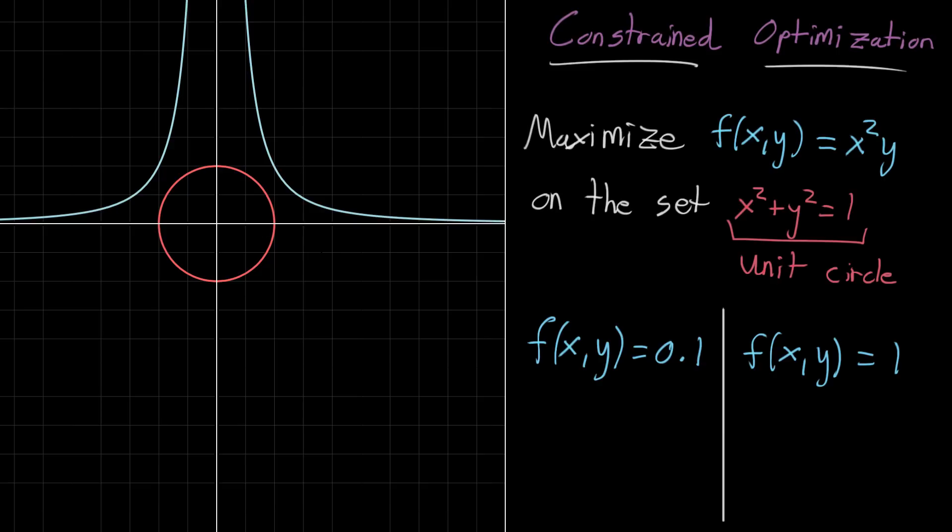And the main thing I wanna highlight here is that at some values, like 0.1, this contour line intersects with the circle. It intersects with our constraint. And let's just think about what that means.